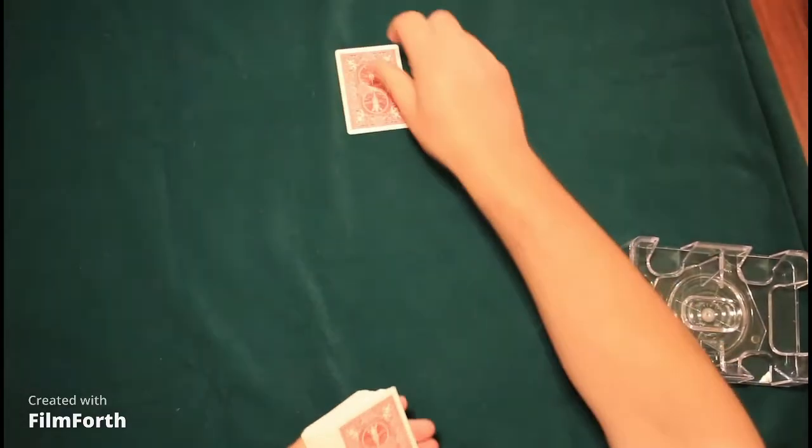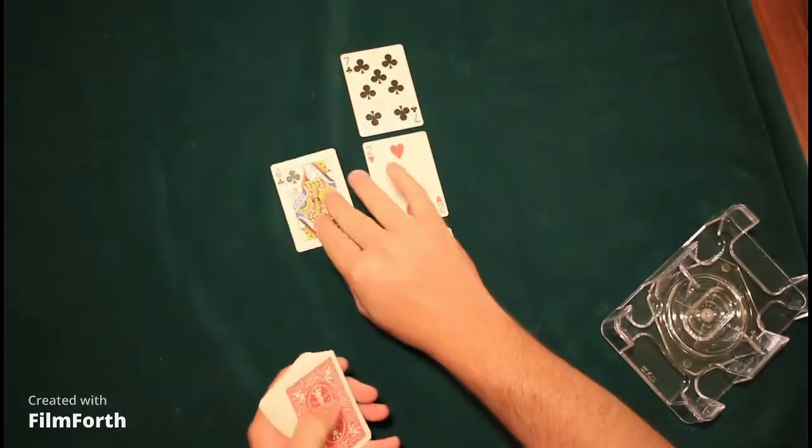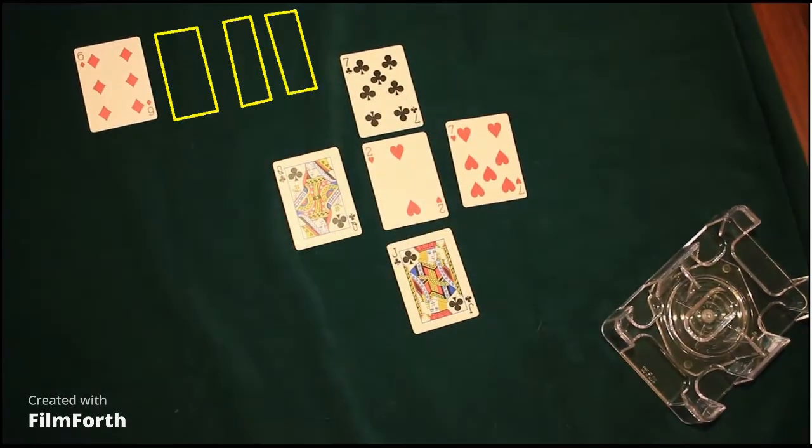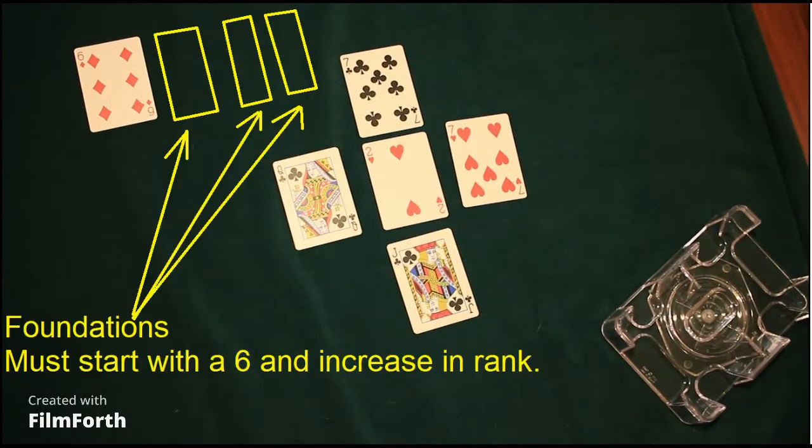In this solitaire, we just need one deck of cards. We're going to shuffle, and then we're going to turn up face up five cards to form a cross, and then we're going to turn a sixth card up to form our foundations.